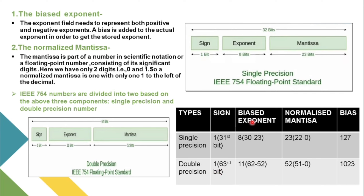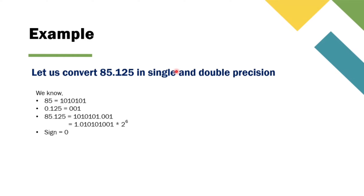There are two types of precision: single precision and double precision. The sign bit of single precision is bit 31, and for double precision it is bit 63. The biased exponent of single precision spans bits 30 to 23, and for double precision bits 62 to 52. The normalized mantissa of single precision spans bits 22 to 0. Let's see single and double precision with the help of an example: converting 85.125.